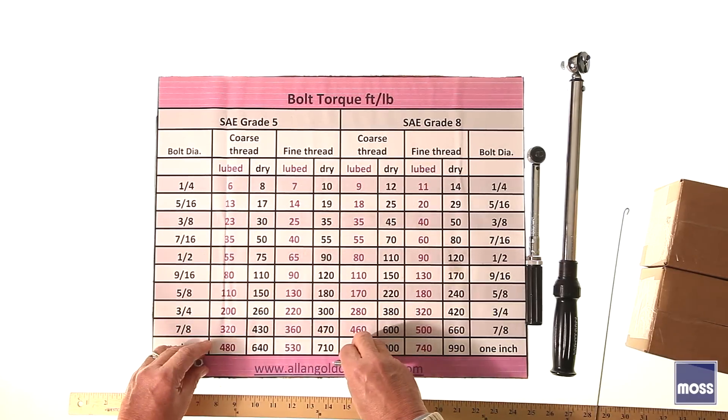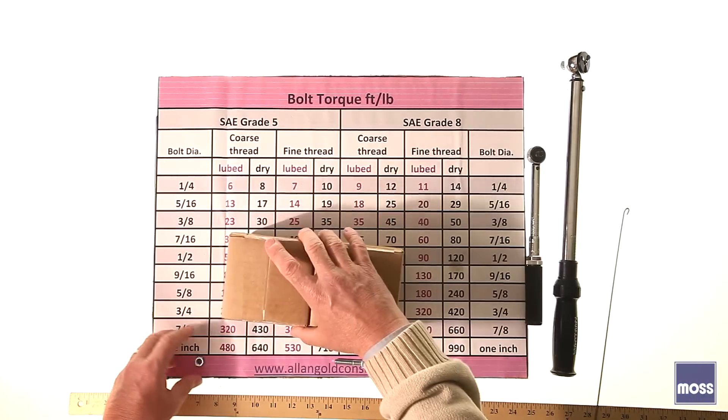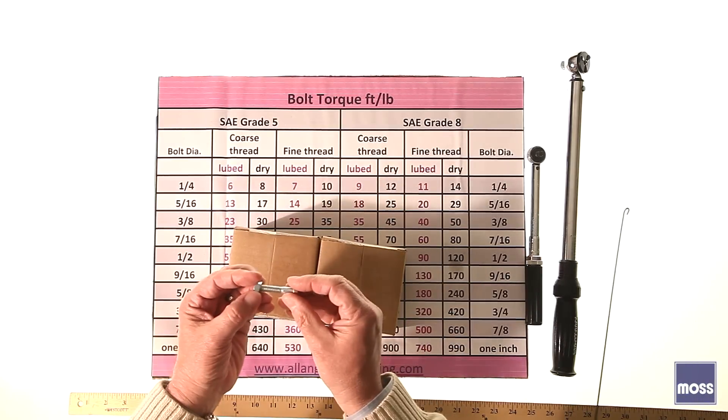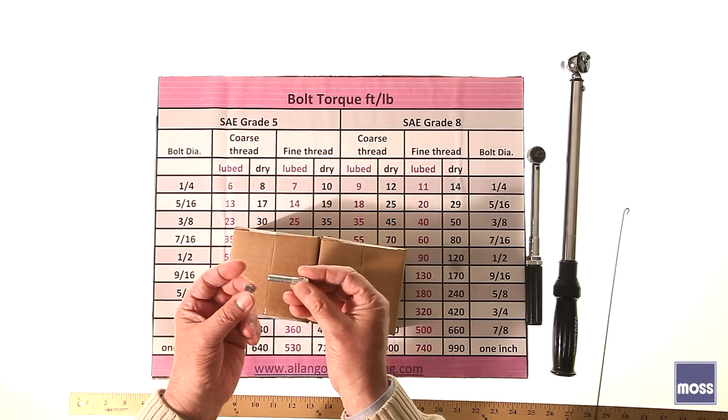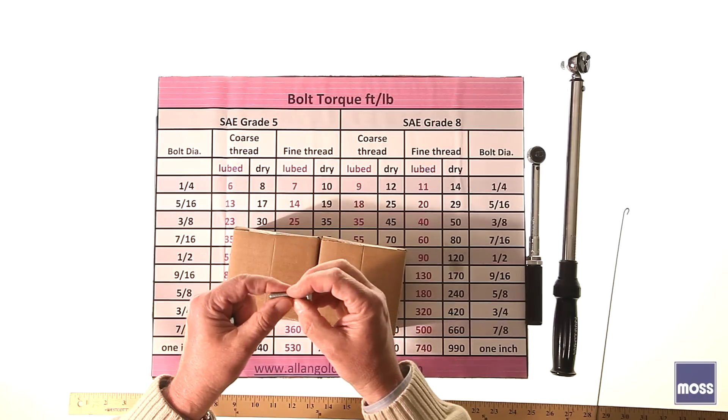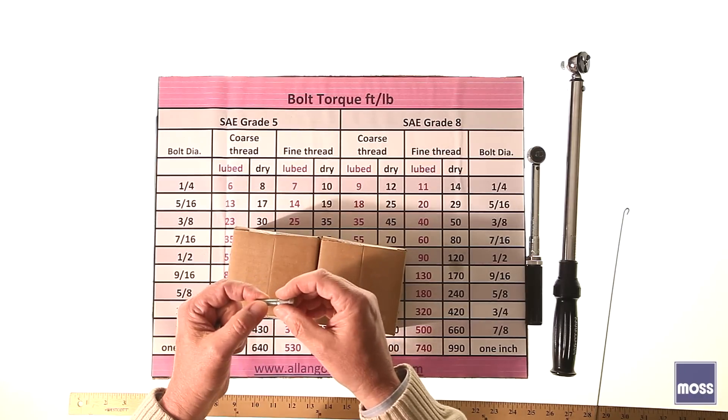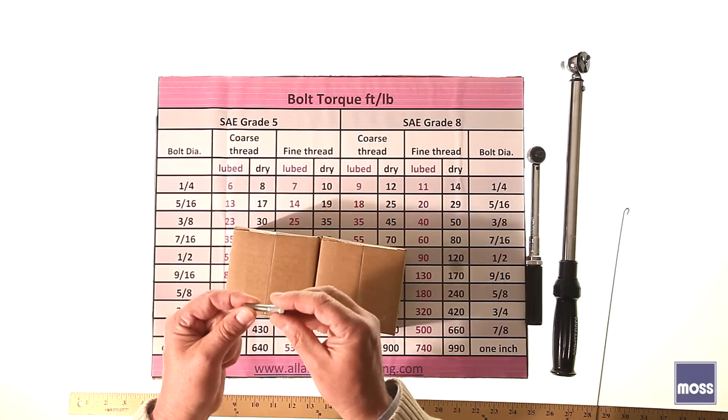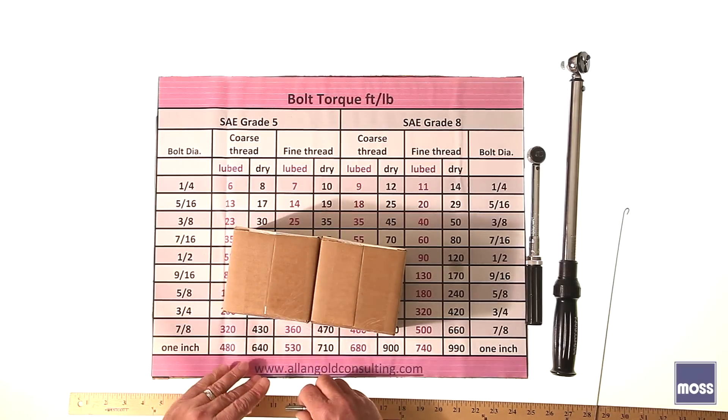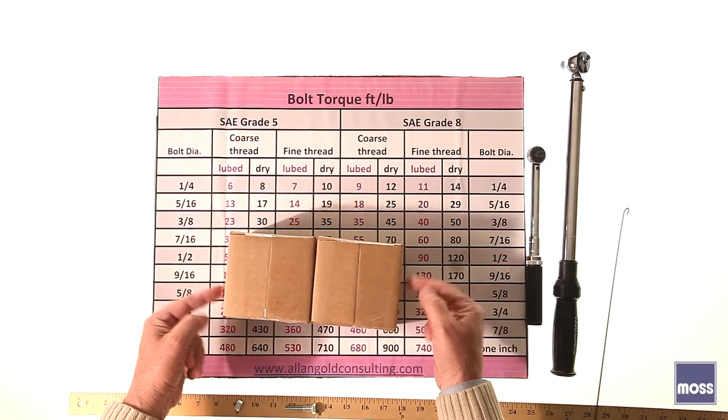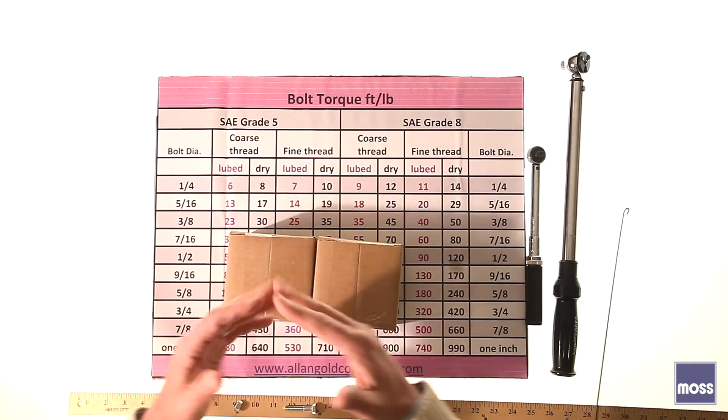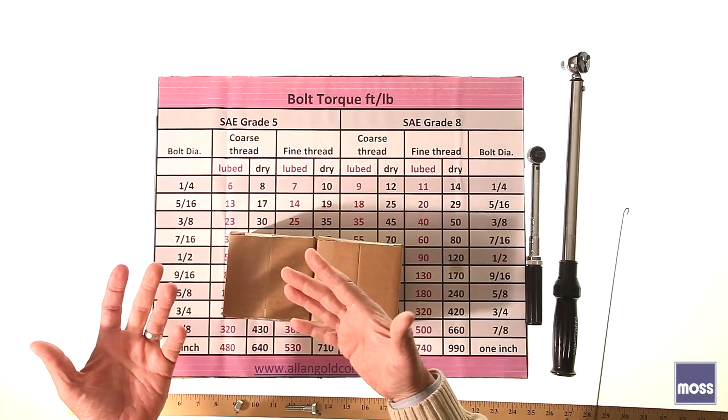There is something else to watch for. When we're working with a fastener and we're using our torque specifications, we don't want to over-torque. If we over-torque, we're going to over-stretch this. We'll either weaken it or worse yet, we can break it. Sometimes these are really strong and they'll hold up to being overstressed, but we will crush what we're trying to put the clamping force on. Over-torquing the bolt is a harmful thing to do.